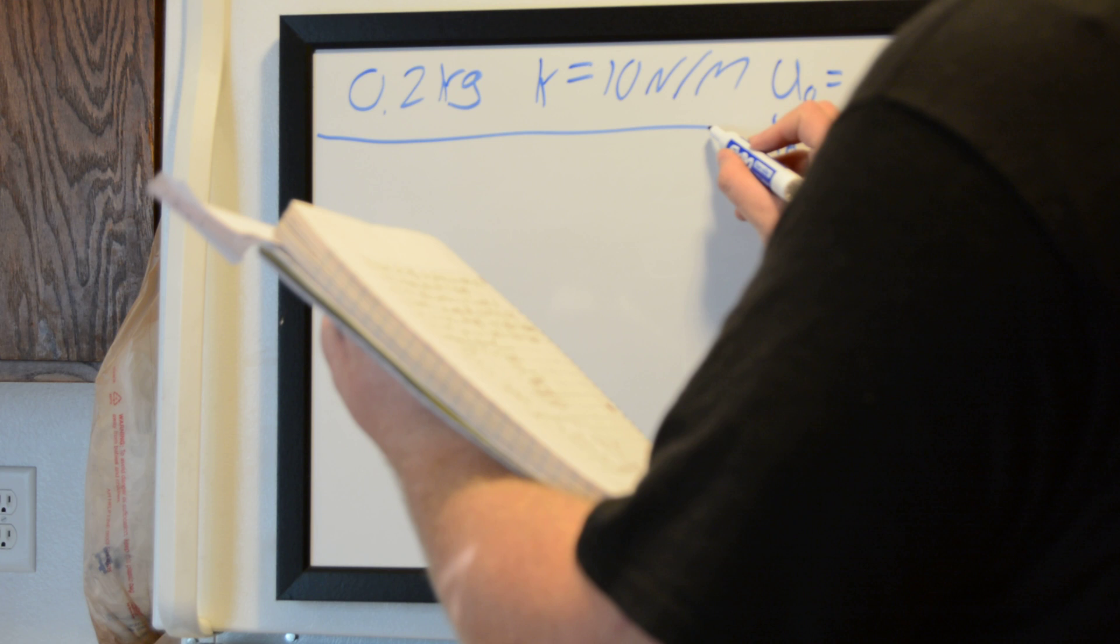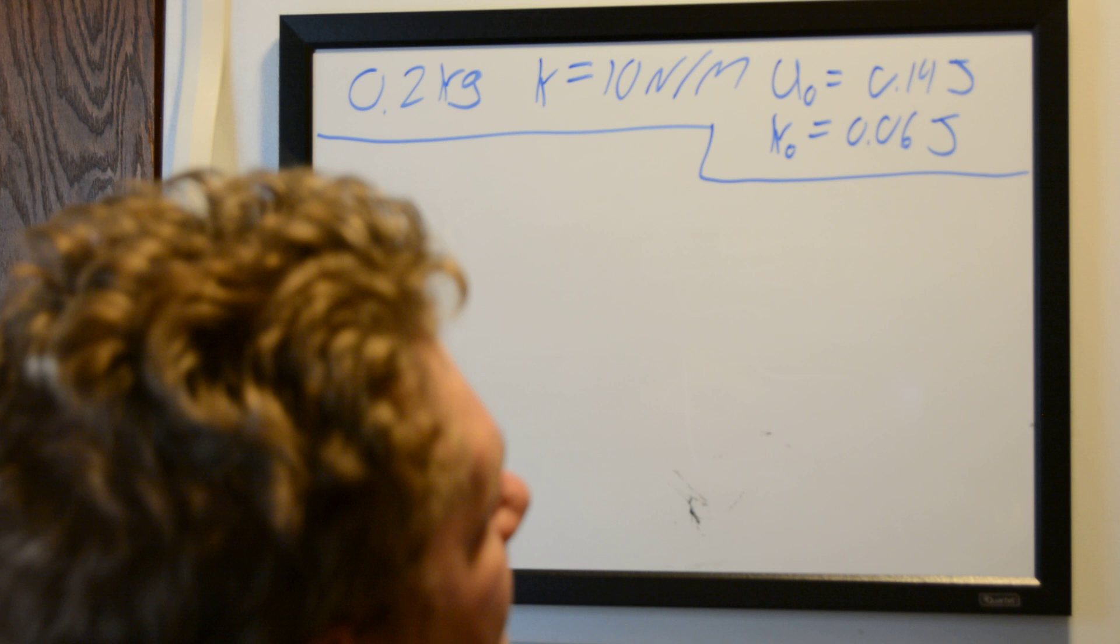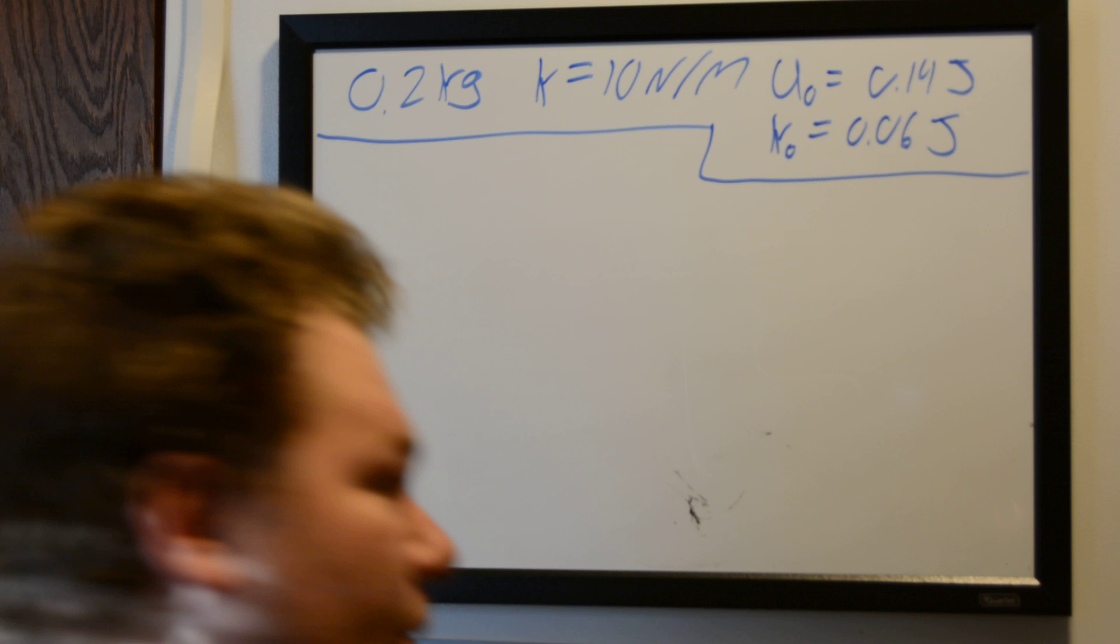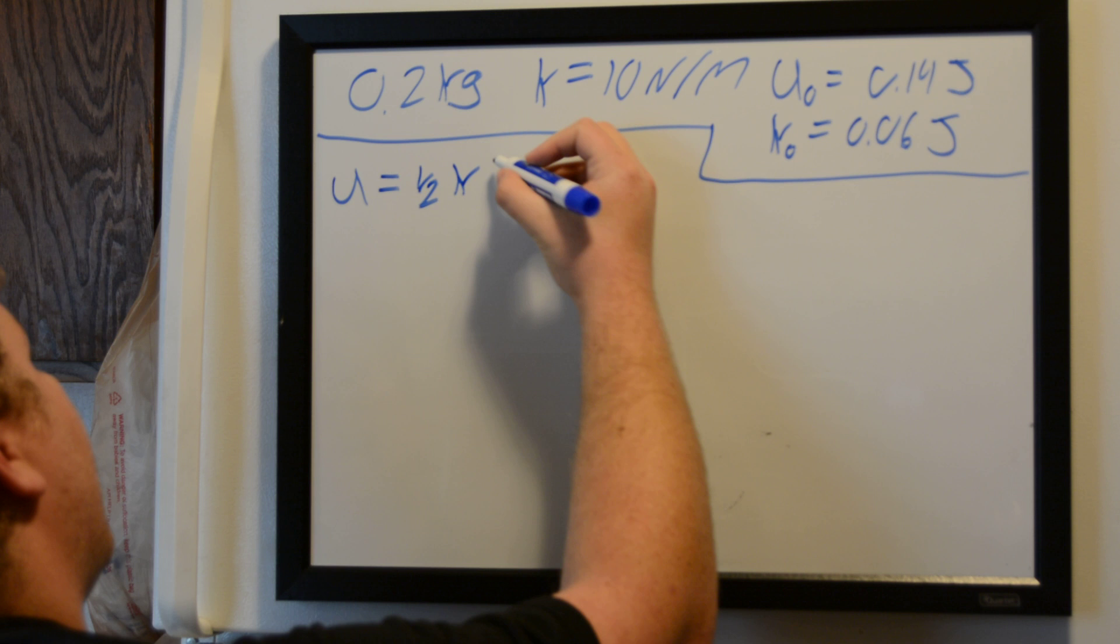And then we're asked to first find the amplitude of the oscillation. So to do that, since we're given a value for our potential energy, we can just use the equation for potential energy of a spring, which is the potential energy is equal to one-half K times the amplitude squared.